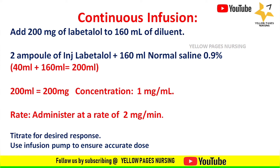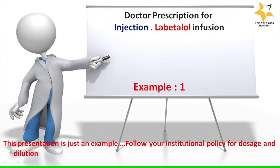The rate of administration will be at 2 mg per minute; titrate for desired response and use an infusion pump to ensure the accurate dose. Let's get into the example — doctor's prescription for injection labetalol infusion is 0.5 milligram per minute.